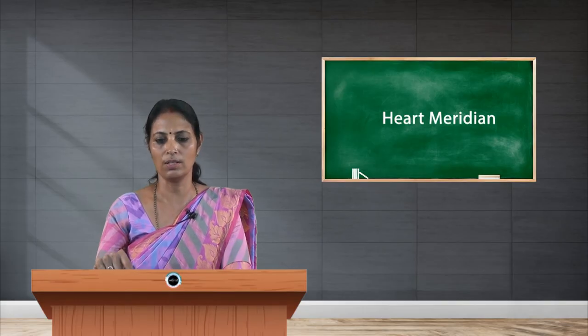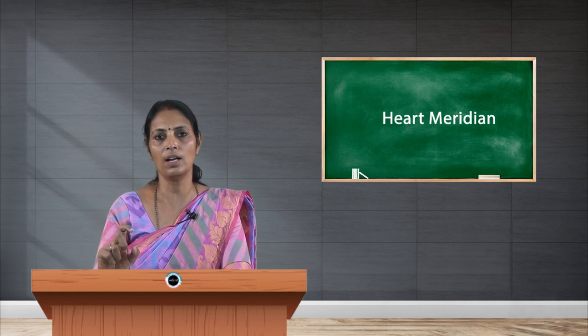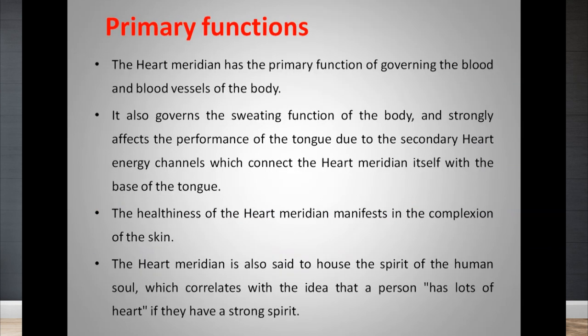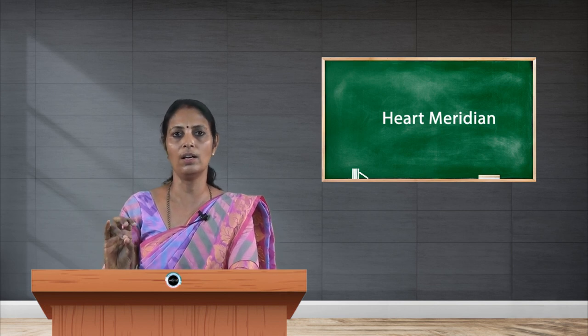Heart 9 is the jing-well point, located 0.1 cun proximal to the lateral end of the nail bed of the little finger. It is used in acute emergencies, and triangular needles are used at this point. These are the common points used in heart meridian. Preferably in therapy, we use Heart 3, Heart 5, Heart 6, and Heart 7 for their potent therapeutic benefits.